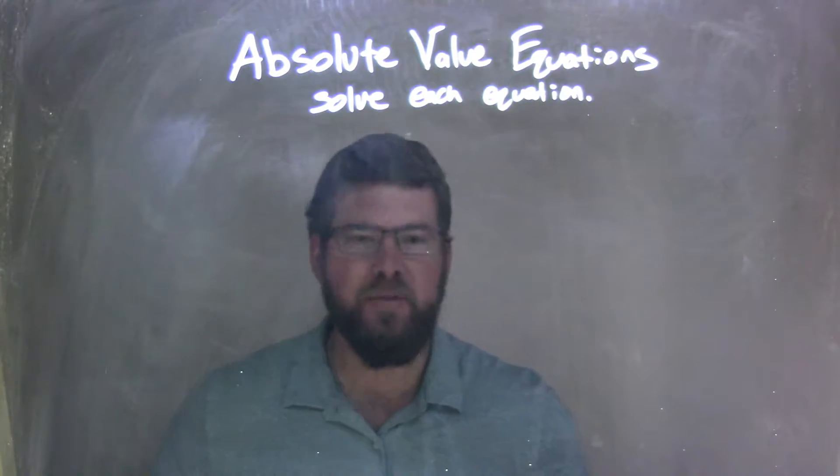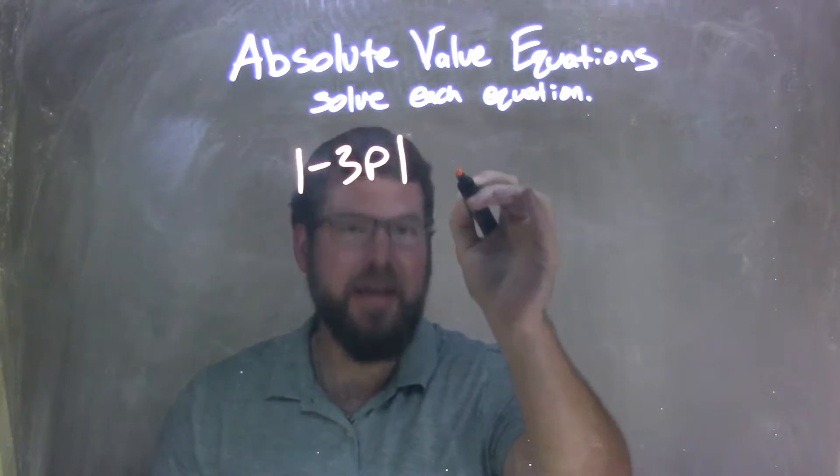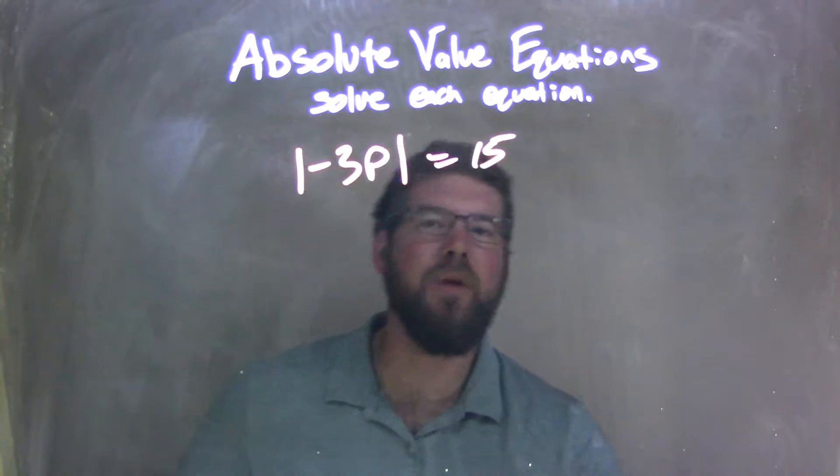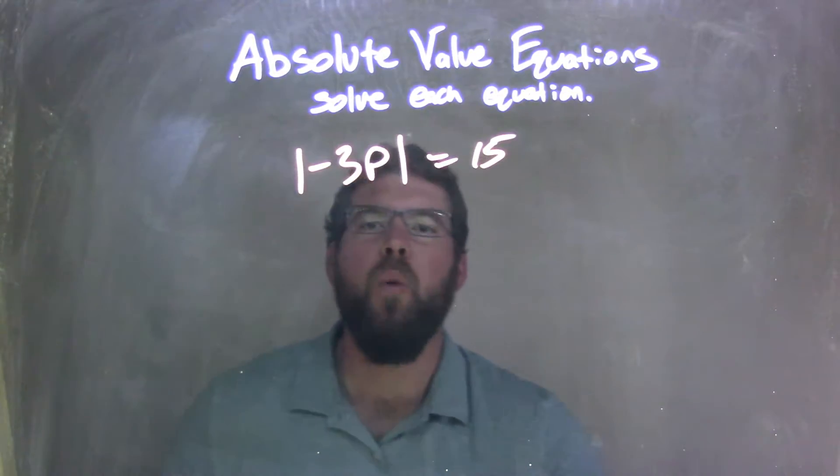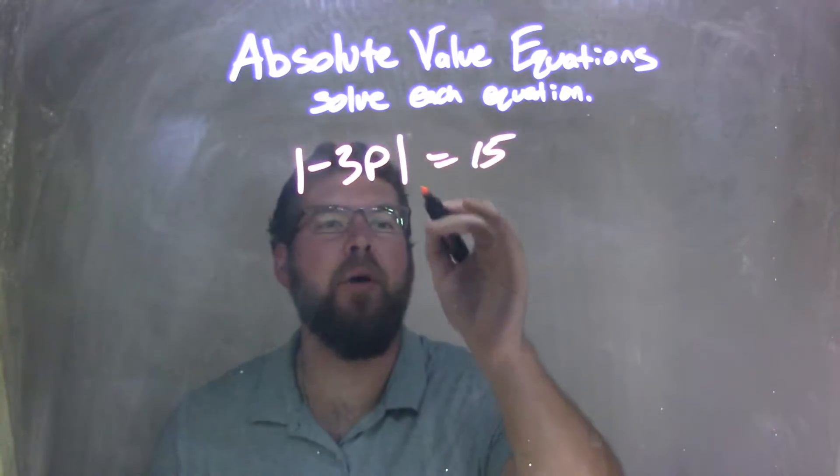If I was given this equation, the absolute value of negative 3p equals 15, once the absolute value is isolated by itself, I then can break it apart into two equations.